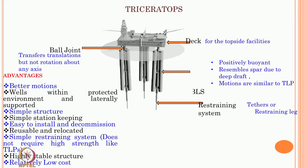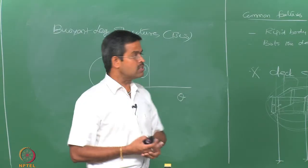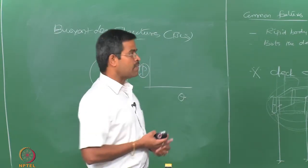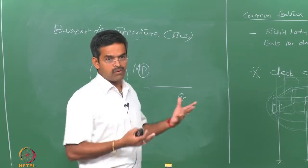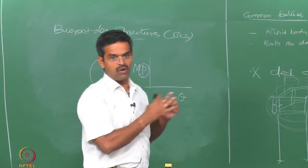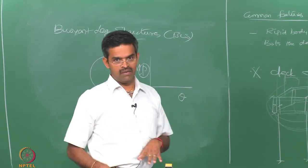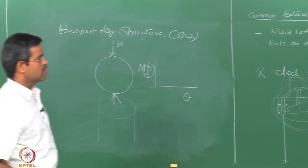This idea was floated by Charles Settle in 2005 at one of the ISOP conferences in Japan. One can ask: is this platform really existing? How can dynamic analysis help conceive an idea of this order? That is the whole context of this lecture — let us see how this can be done. The deck, the buoyant structures, and the restraining system — essentially a tether or restraining leg — make it a positive buoyant system resembling a deep-draft spar, with motions more or less similar to that of a TLP.